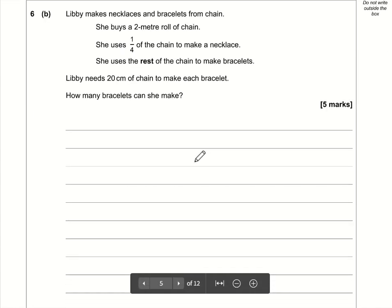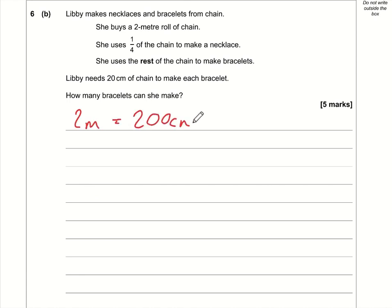Okay, 6b. So the first thing to do is turn the meters into centimeters, I think. Two meters is 200 centimeters, and she's using a quarter of the chain to make a necklace. So what is one-quarter of 200? Well, a quarter of 200, that is 200 divided by 4, which is 50 centimeters.